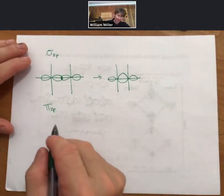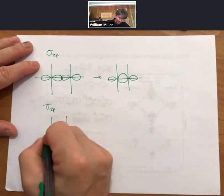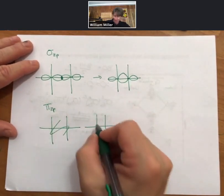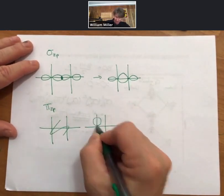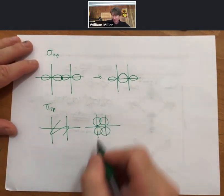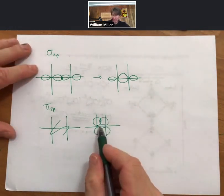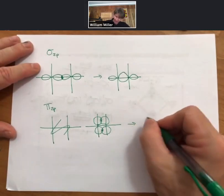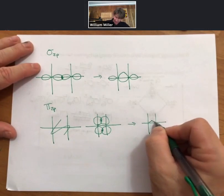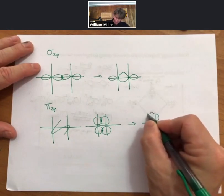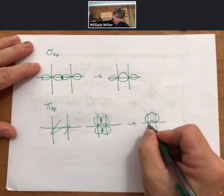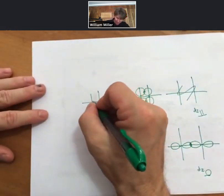Now pi 2p. For pi 2p, you're going to have to take these two p orbitals. Where they overlap, you're going to get adding. Our answer here is going to be something like this. Where they add, it goes up.